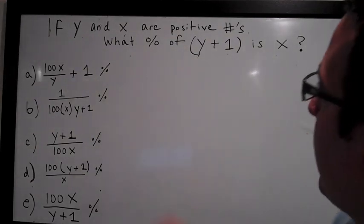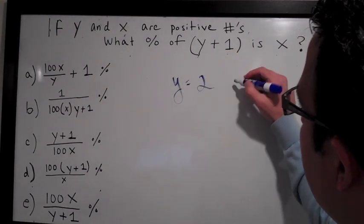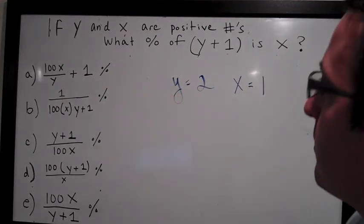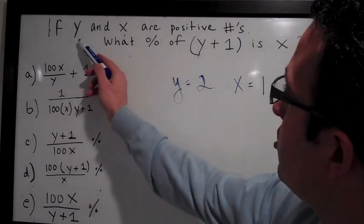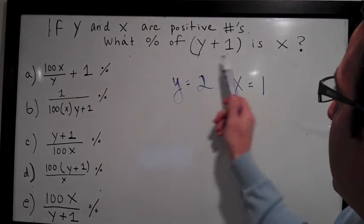The first thing you do is plug in values for y and x. Let's make y equal 2 and x equal 1 for this problem. Now re-read the question with the numbers you assigned for the variables. If 2 and 1 are positive numbers, what percent of 3 is 1?